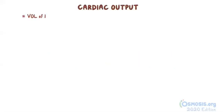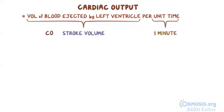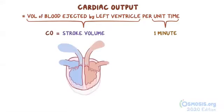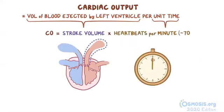Cardiac output is defined as the volume of blood ejected by the left ventricle per unit time. The volume of blood is called the stroke volume, and the unit used to measure cardiac output is one minute. Cardiac output can be calculated as stroke volume — the volume of blood pumped out of the left ventricle per beat — times the number of heartbeats per minute, which is around 70.